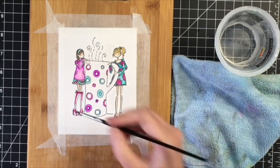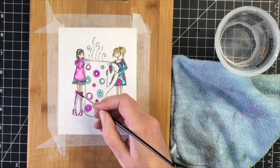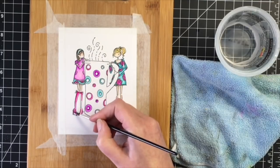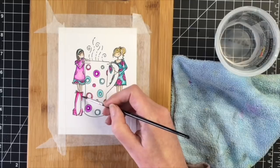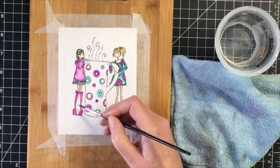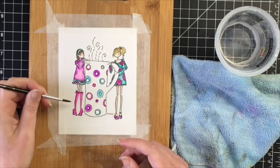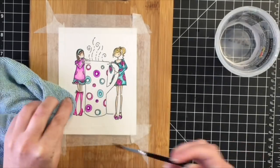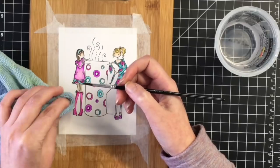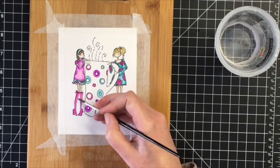I'm using some Bristol Smooth cardstock today to color on. I find this is the best cardstock when you're watercoloring. I did get out of the lines a little bit here, so I'm trying to fix that up by adding some water and kind of dabbing that up with my microfiber cloth.